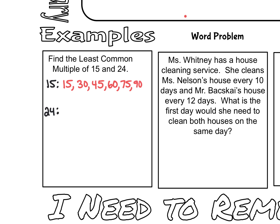I'm going to stop there for a bit and try some for 24, to get an idea of where I'm going. So I'm going to go 24, then 48, then 72, then 96. At this point we still don't have a common multiple, so I'm going to go on from there.